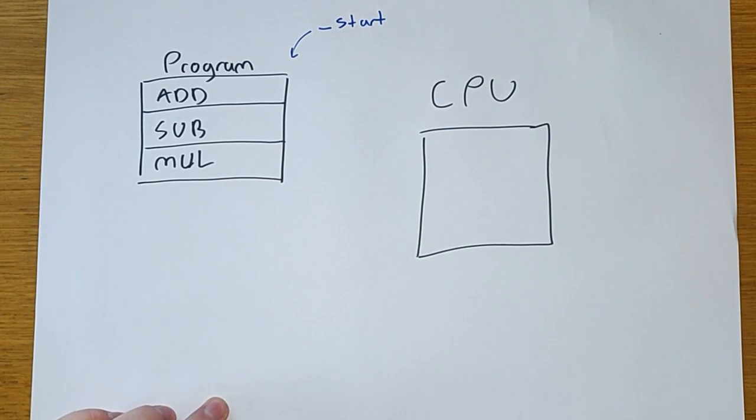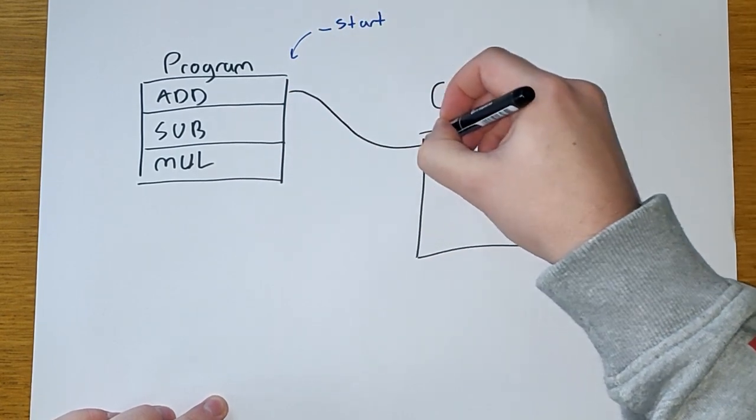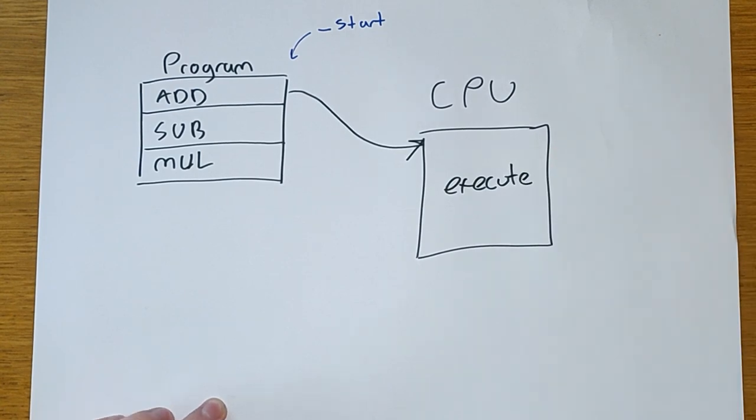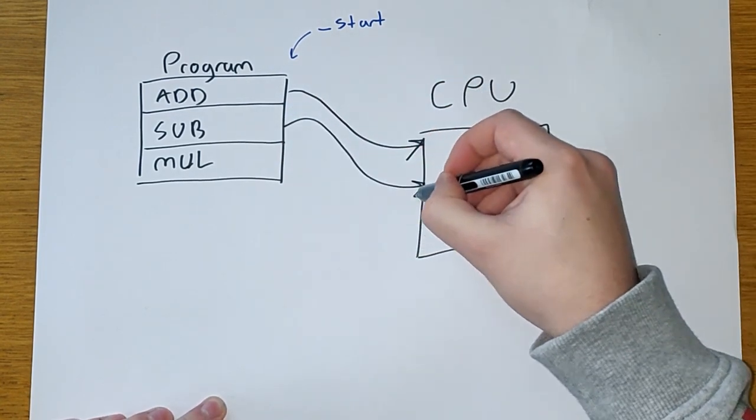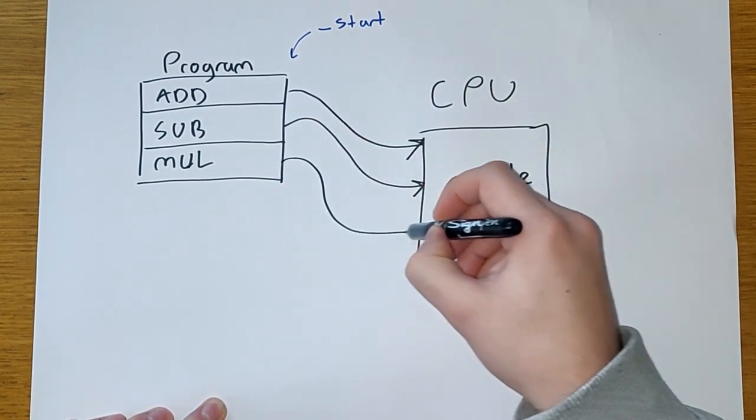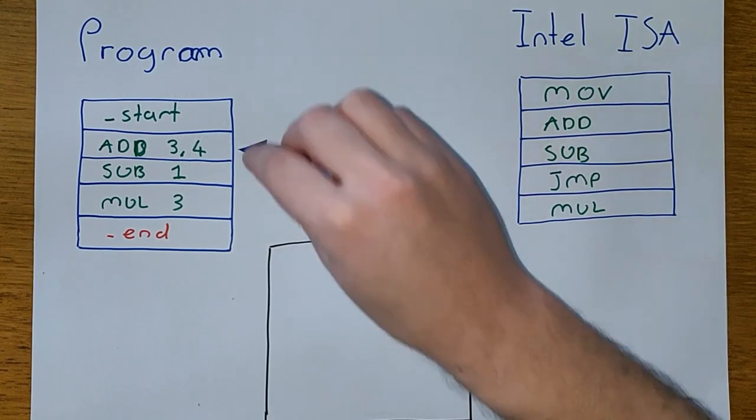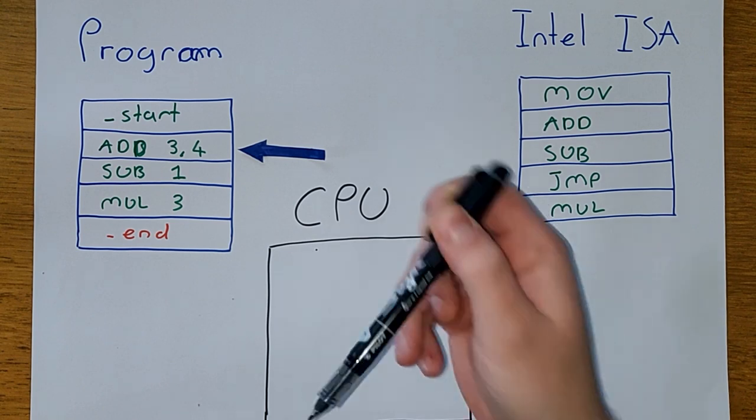Remember, the only thing a processor knows how to do is read instructions from the beginning of a program, perform some action such as moving data or calculate a value, then read the next instruction and repeat the steps I've just mentioned. Here's the example, written down as I've mentioned earlier, but drawn on my paper.